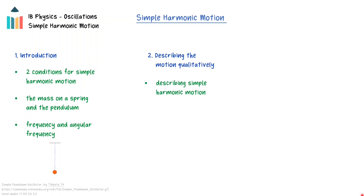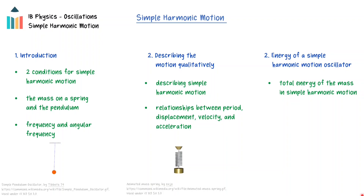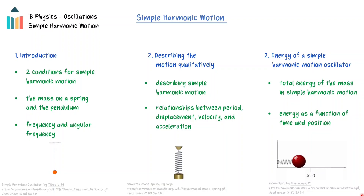Secondly, the motion of the oscillator will be described qualitatively with a focus on the velocity and acceleration at the equilibrium point and the maximum displacements. The relationships between the period, displacement, velocity, and acceleration will also be explored. Finally, the energy of a mass undergoing simple harmonic motion will be explained and the graph of energy as a function of position will be discussed.